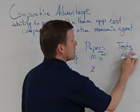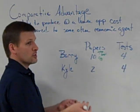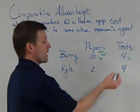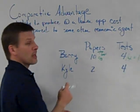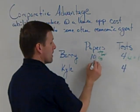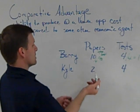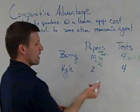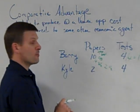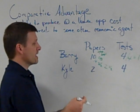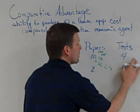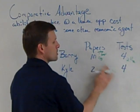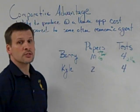Now we're going to do the same thing for Barry writing tests. Let's divide by four. When Barry writes one test, how many papers is he giving up? We divide the papers side by four, and that reduces down to five-halves. So Barry would give up two and one-half papers when he decides to write a test. I'll make a note of Barry's opportunity cost when he writes tests.